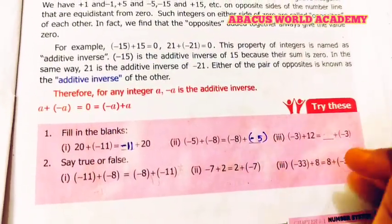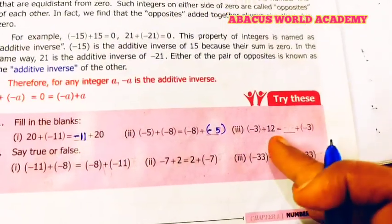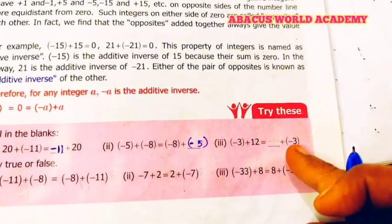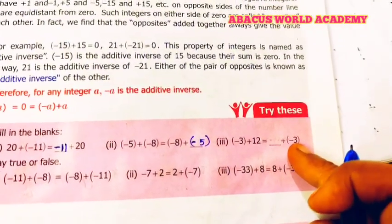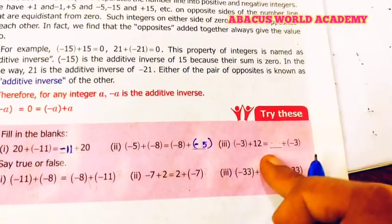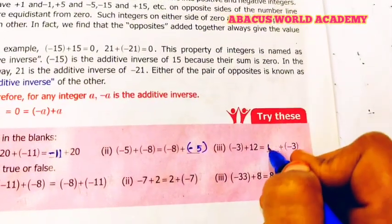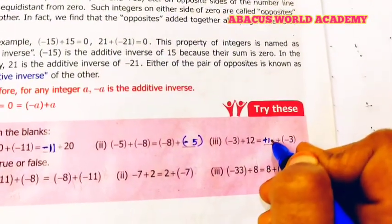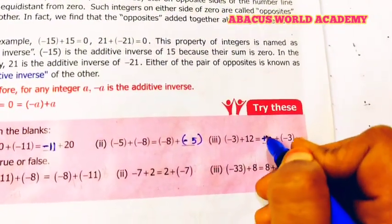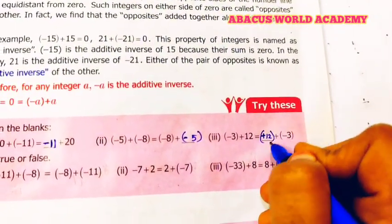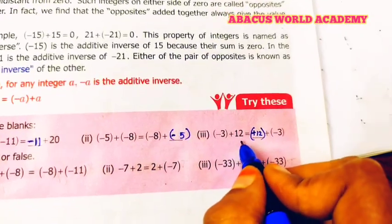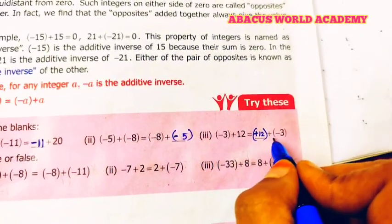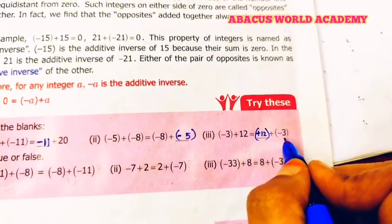Write it inside the bracket. Next, this is minus 3 plus 12. Minus 3 — what do we do? Plus 12. So minus 3 plus 12 is equal to 12 plus minus 3.